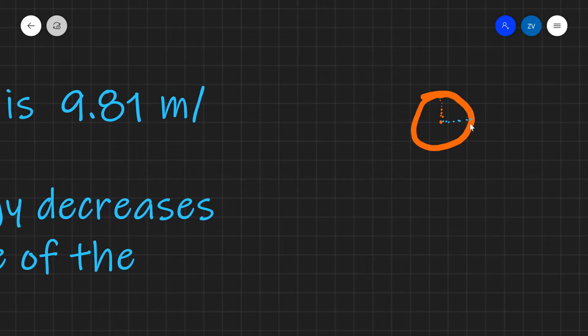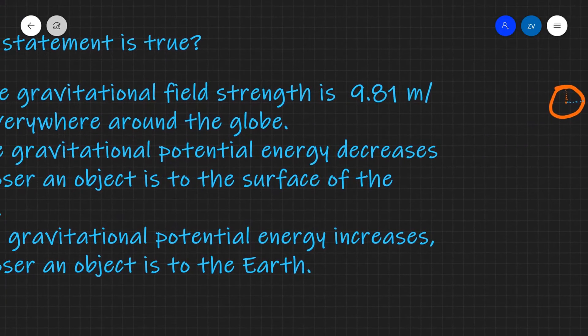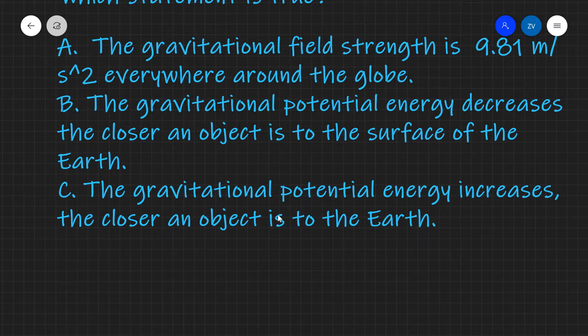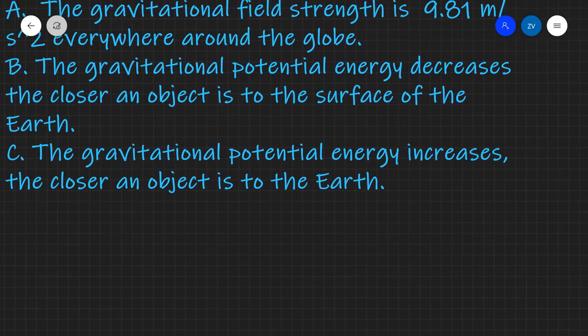So the first statement is, I'm afraid, wrong. Statement C says the gravitational potential energy increases the closer an object is to the Earth. Well that's actually not true.